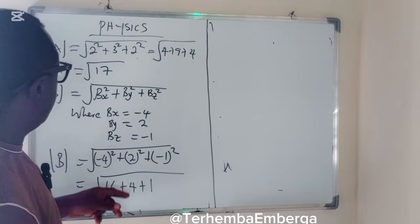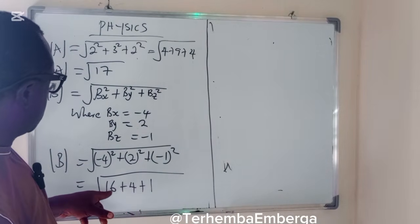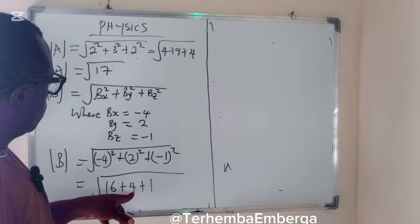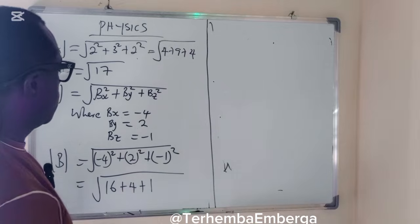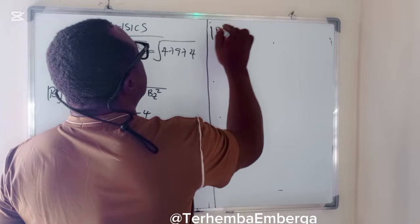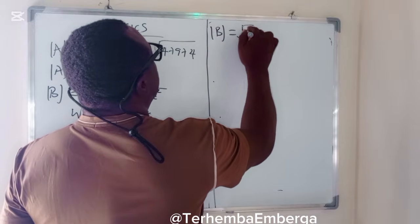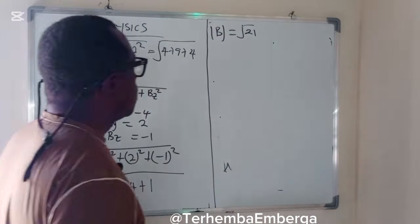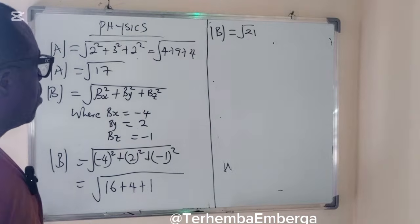We'll now have 16 plus 4 is 20, plus 1 is 21. So modulus of B equals the square root of 21. So we have gotten all the parameters.